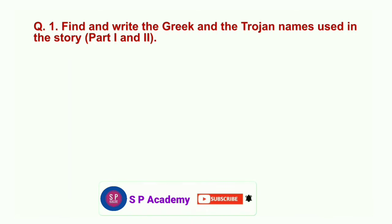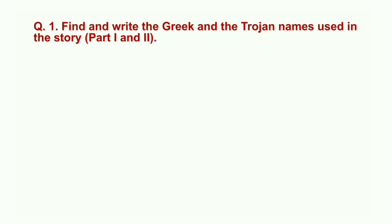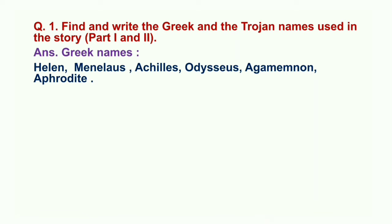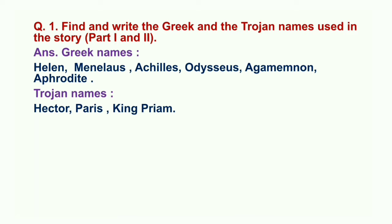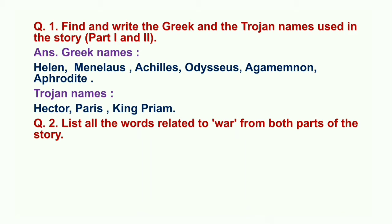Question number 1: Find and write the Greek and the Trojan names used in the story, Part 1 and Part 2. Answer — Greek names: Helen, Menelaus, Achilles, Odysseus, Agamemnon, and Aphrodite. Trojan names: Hector, Paris, King Priam.